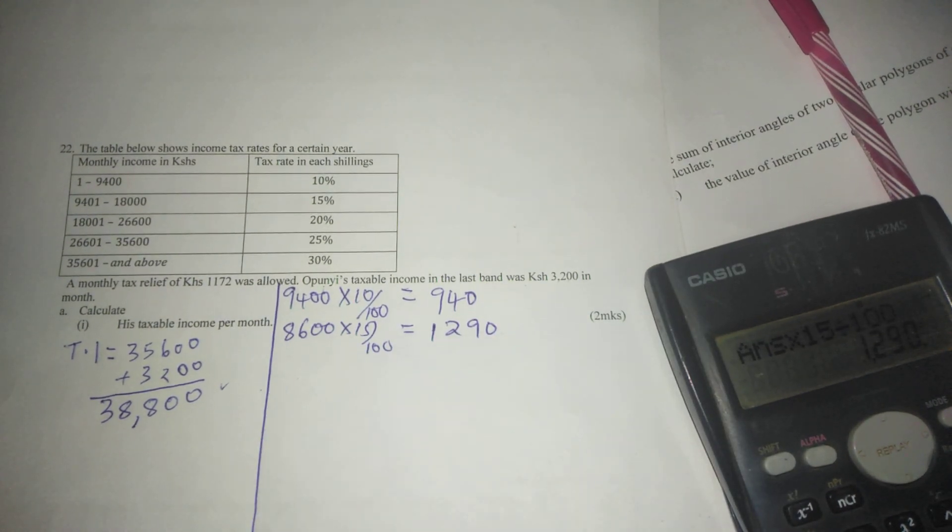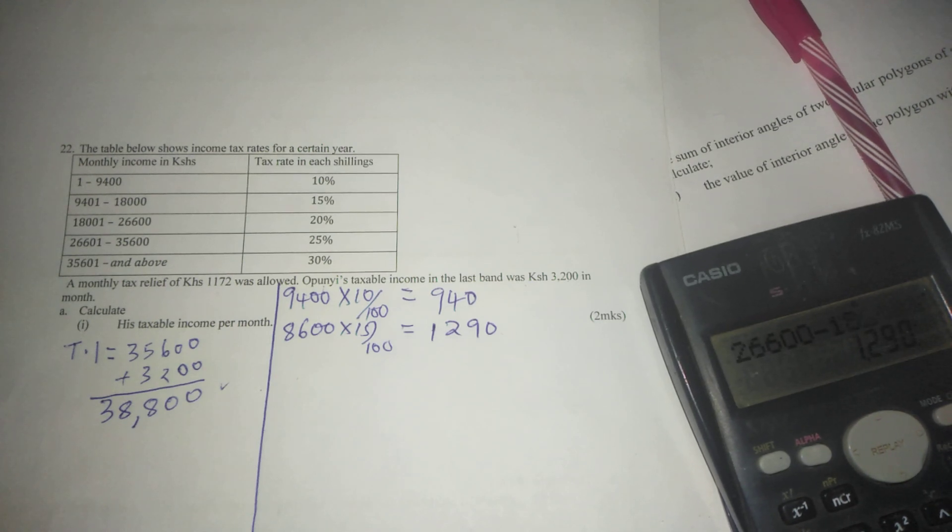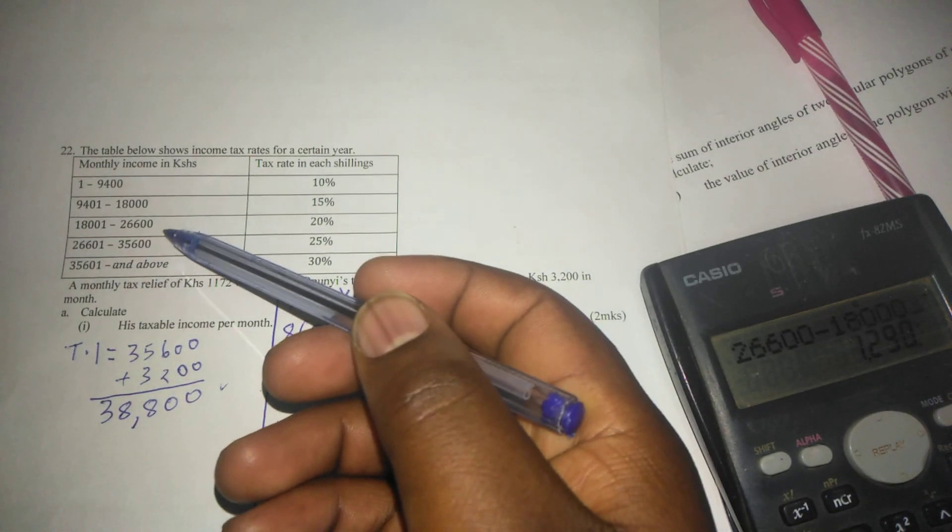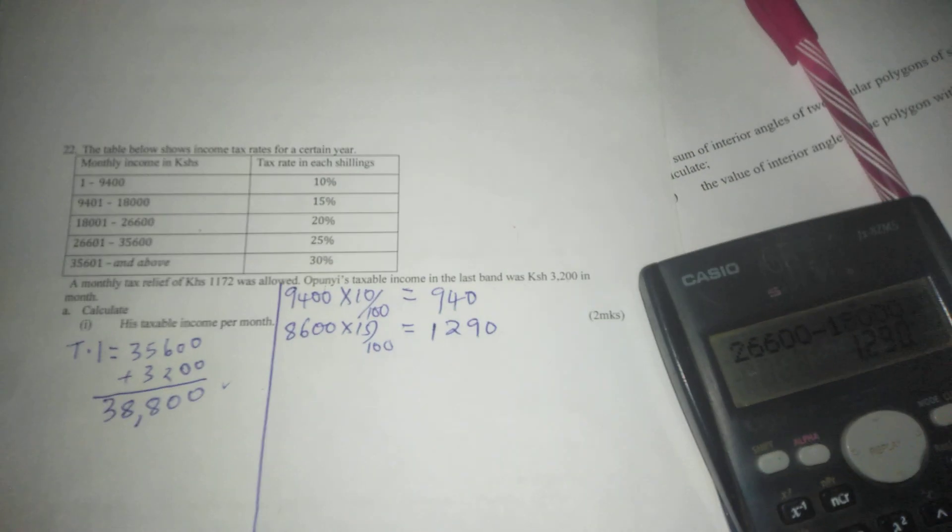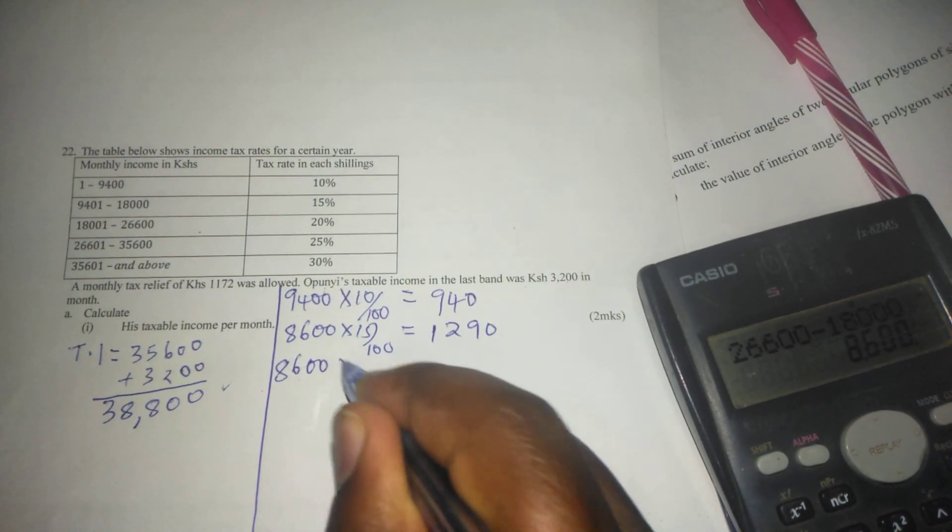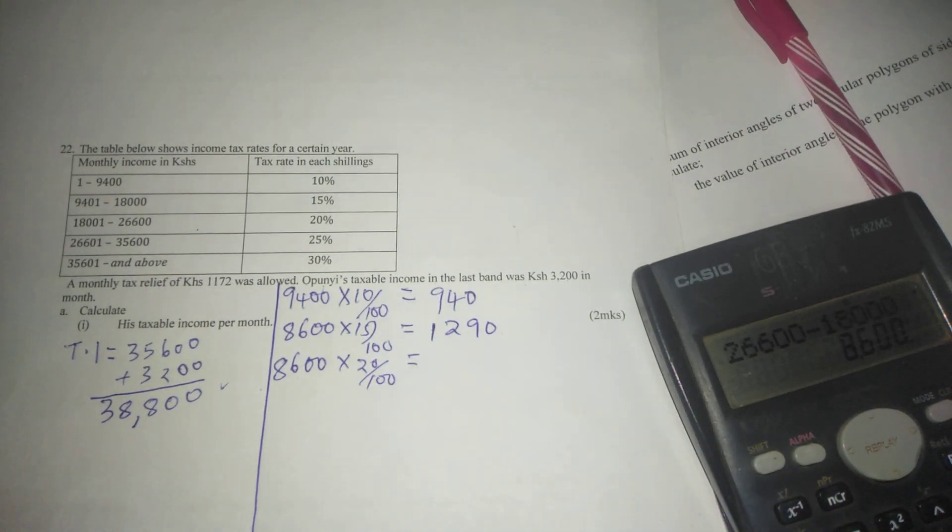In the next bracket we have 26,600 minus 18,000. For us to know what lies in the third bracket, we subtract this amount from this such that we get 8,600 at the rate of 20 percent. This gives us 1,720.